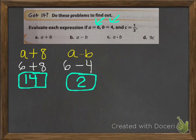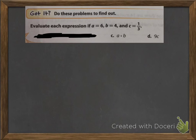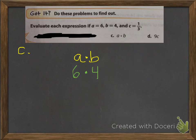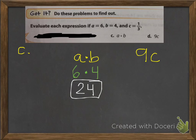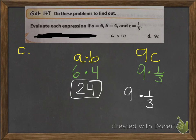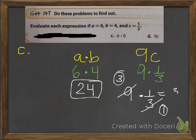For C, you've got A times B, where A is 6 times B which is 4, so 6 times 4 equals 24 — that is our final answer for C. For D, the original problem is 9C, or 9 times C. Substitute: 9 times 1/3. Because it's a fraction, write the problem again on the solve line. Divide each by 3: you get 1 here and 3 here, then 3 times 1 equals 3. Your final answer for D is 3.